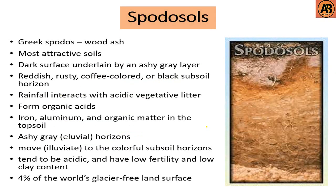Next are Spodosols. Spodosols come from the Greek word spodos, meaning wood ash. Spodosols are visually striking soils with a dark surface underlain by an ash-gray layer, and a reddish, coffee-colored, or black subsoil. Rainfall interacts with acidic vegetative litter to form organic acids.